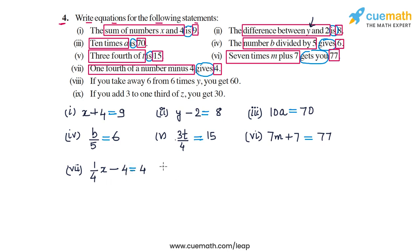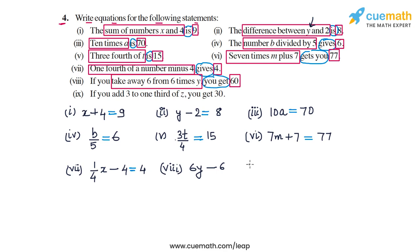In part 8, the statement says: if you take away 6 from 6 times y, you get 60. 'You get' translates to the equal to sign. So the LHS is take away 6 from 6 times y, and the RHS is 60. 6 times y is 6y, and take away 6 from this gives 6y minus 6. So 6y minus 6 is equal to 60 is your equation in part 8.